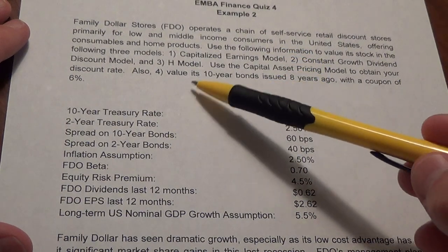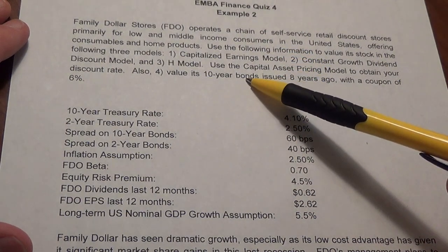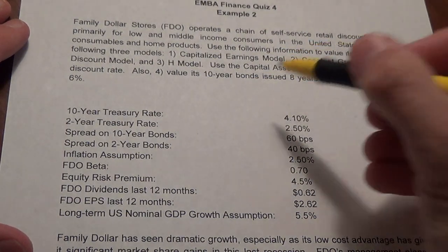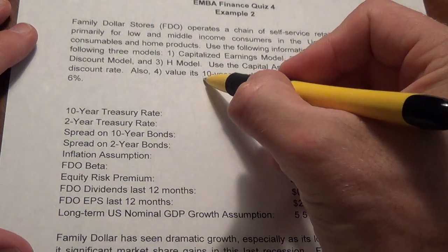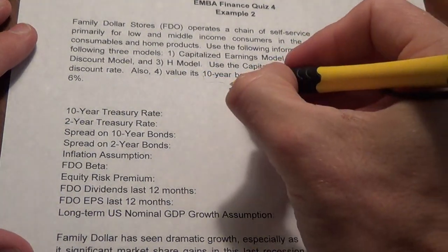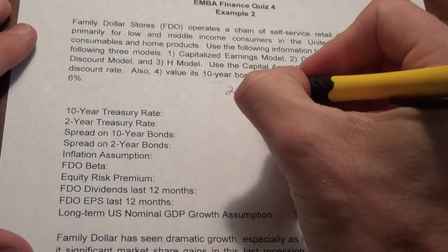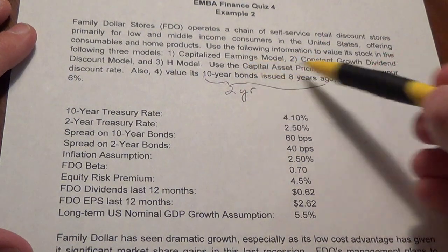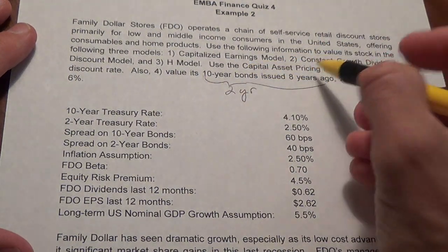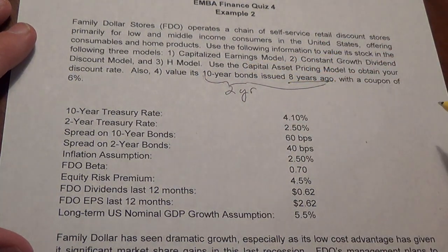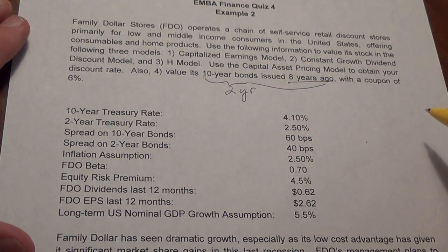And then value the bond. It's a 10-year bond issued 8 years ago, which means it essentially has 2 years remaining. We ignore the fact that it was originally a 10-year bond — it only has 2 years left, so it essentially is a 2-year bond.